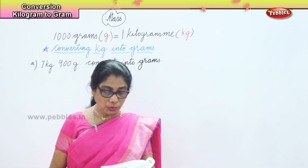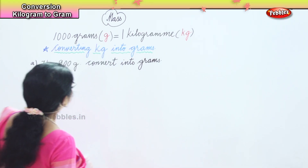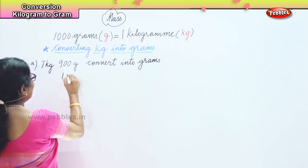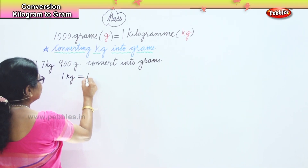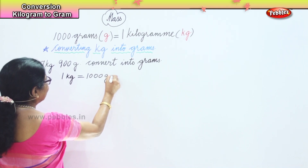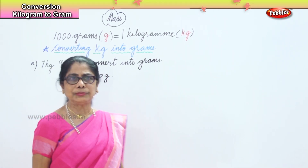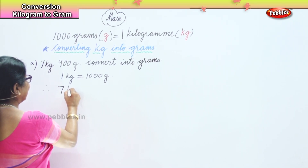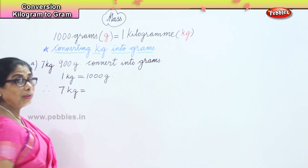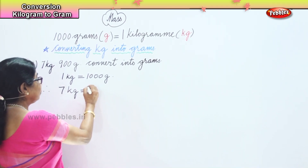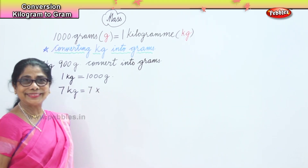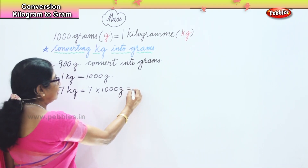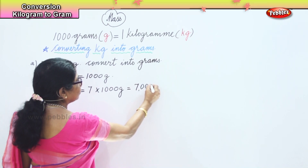First, we write down: 1 kilogram is equal to 1000 grams. Now, how many kilograms do we have? We have 7 kilograms. So to convert 7 kilograms into grams, we do 7 into 1000, which gives us 7000 grams.